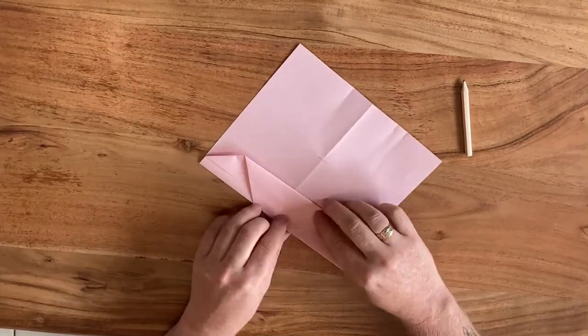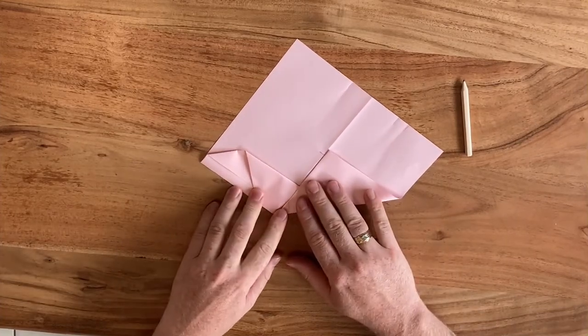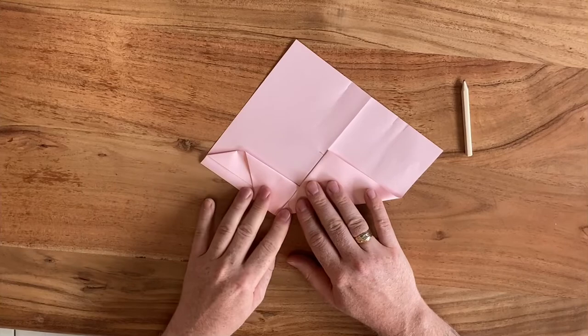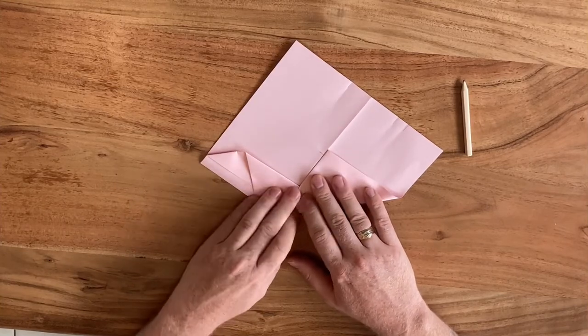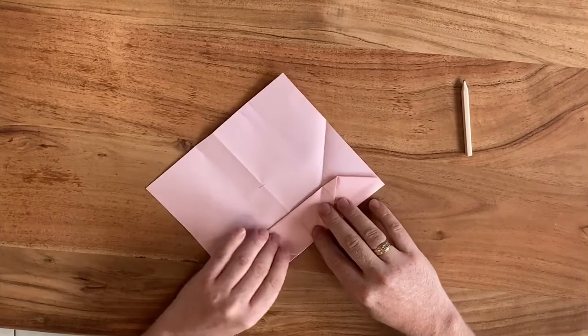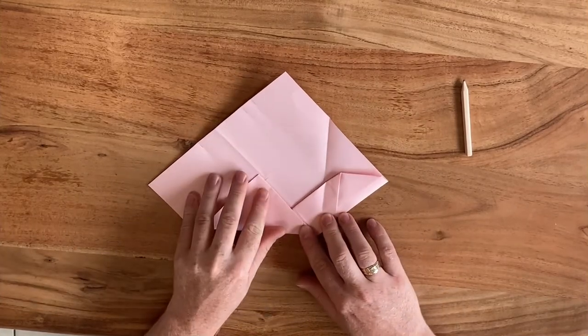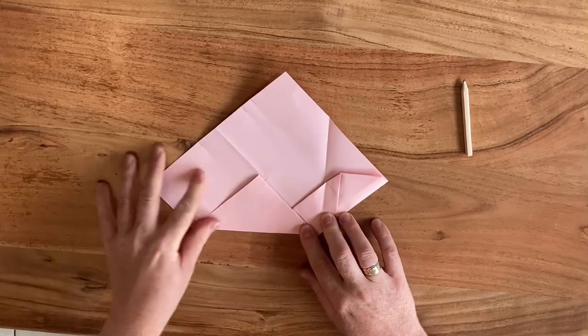Now we're going to fold this corner towards the center crease and we actually want to leave a little bit of margin here, about half a millimeter. So don't bring it all the way towards the center crease but leave half a millimeter of space, else you risk ripping your paper. And we do the same on the other side.